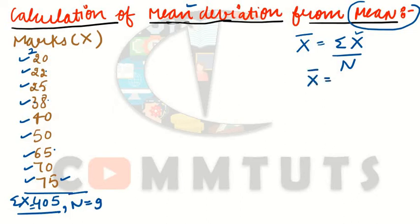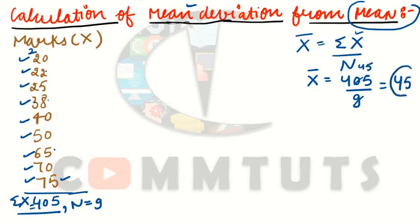So x-bar, the arithmetic mean, is 405 divided by 9. 405 divided by 9 equals 45. So x-bar is 45. It's simple — first you calculate the mean.